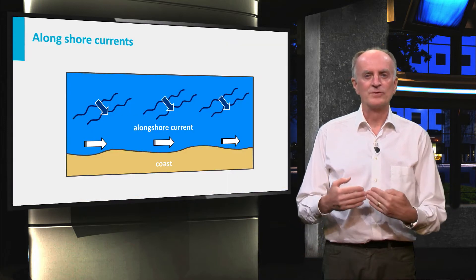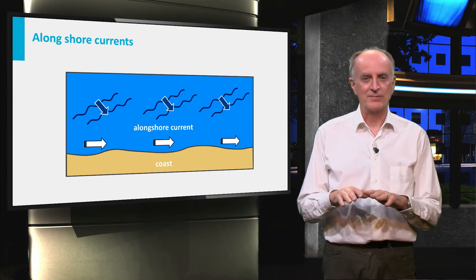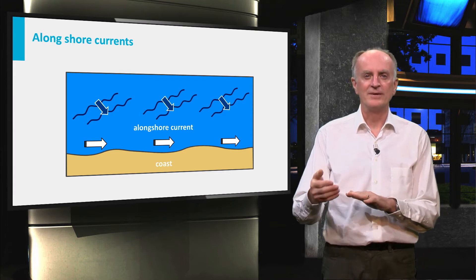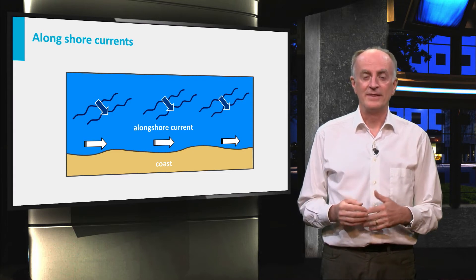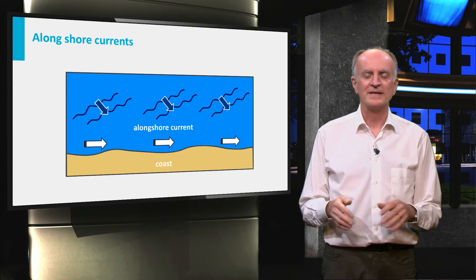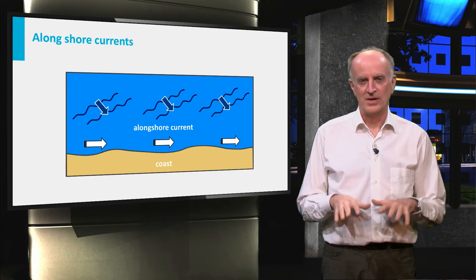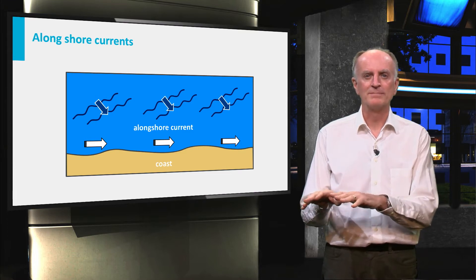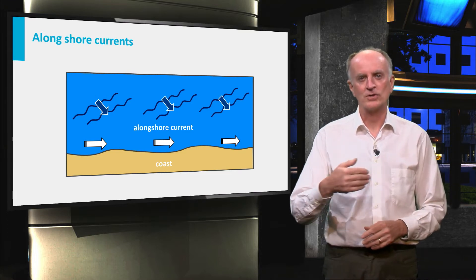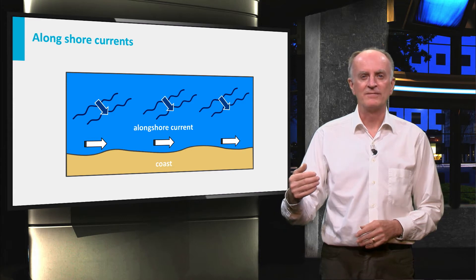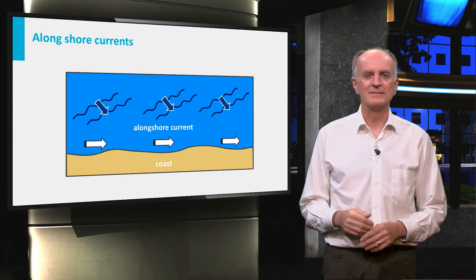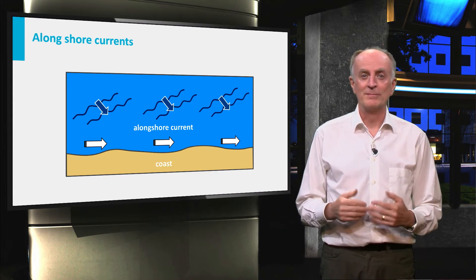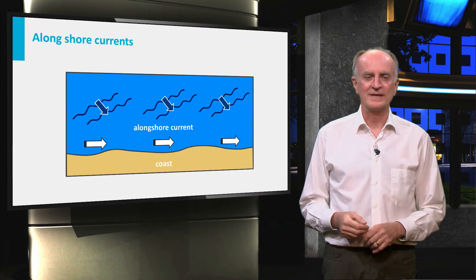When currents move towards the continent, they will interact with the continental shelf and then with the coastal domain. Their movement is conditioned by sea floor topography. Water masses transported towards the coast are diverted, causing potentially very important along shore currents, key for the erosion, transport and sedimentation of sands. We will look in more detail at these phenomena at a later stage.